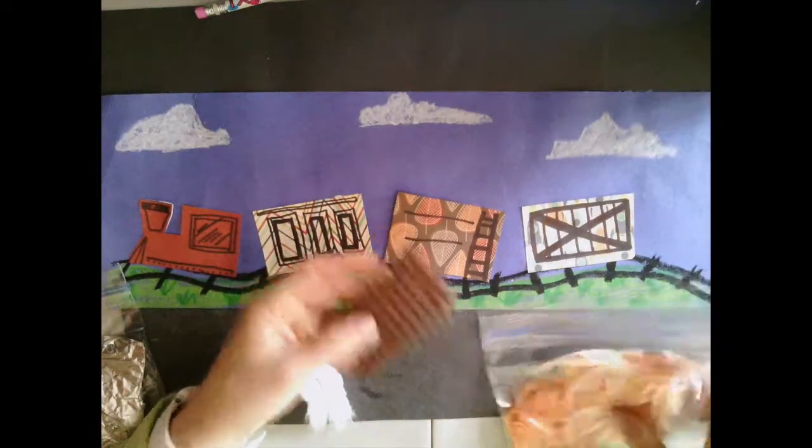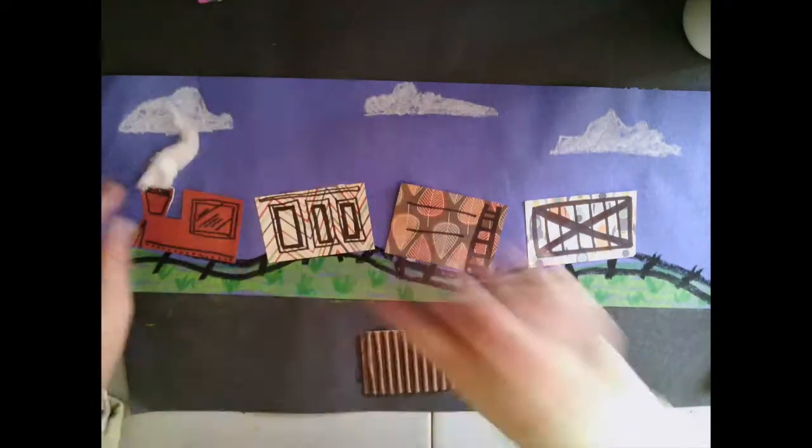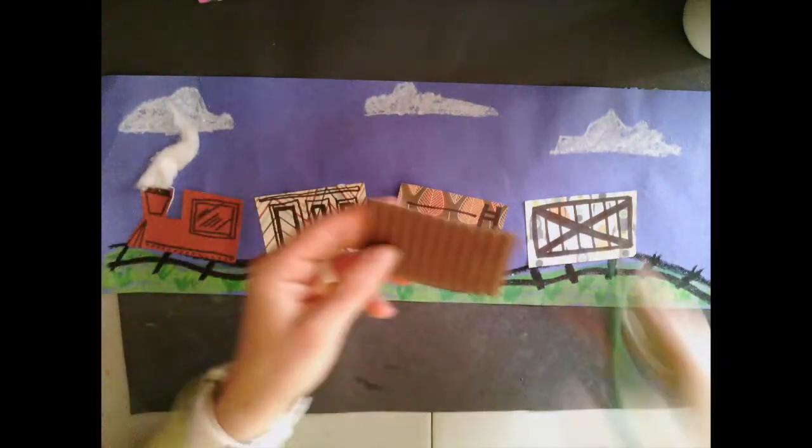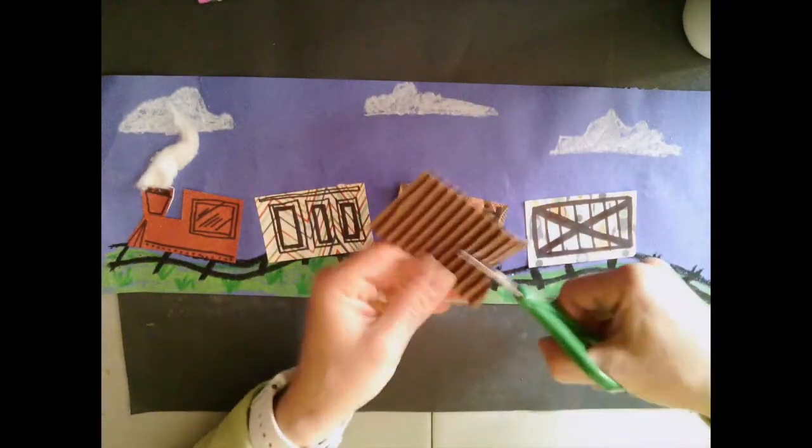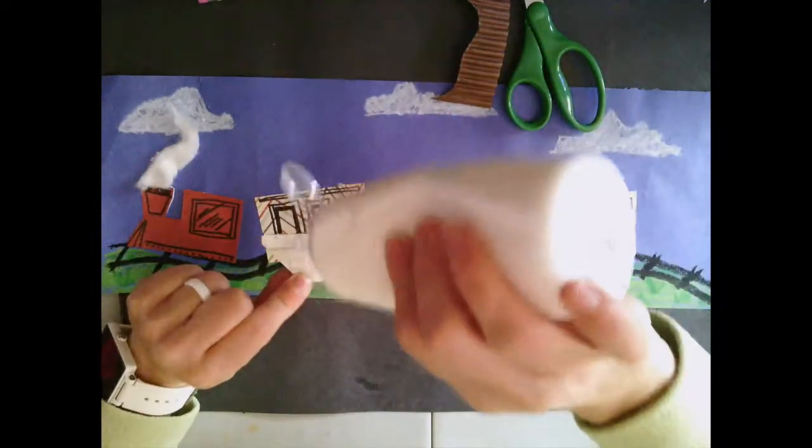Now for the really fun part of this project, we get to start making textures. You can use any kind of texture that you see on the back table. Some cotton for the smoke that comes out of the top. There's different colors of yarn, corrugated paper, aluminum foil, feathers, tissue paper. You do what works best for you.